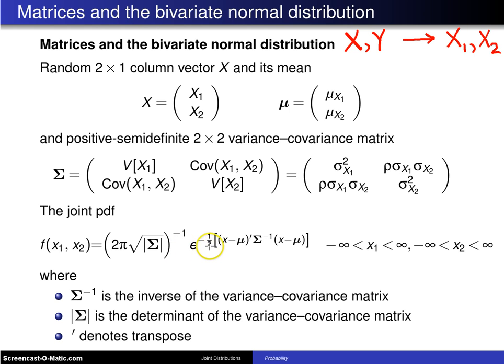Multiplied by e to the minus 1 half, x minus mu prime. Well, the prime denotes transpose, so this vector right here, because of the transpose, will be a 1 by 2 vector. That gets multiplied by the inverse of the variance covariance matrix.